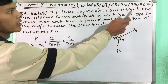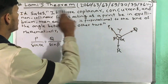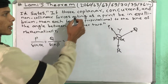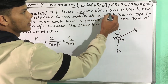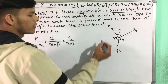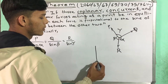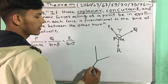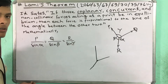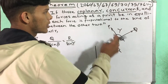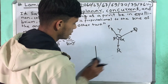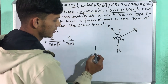This is a co-planar and concurrent and non-collinear force. In this case, this is the co-planar force, which acts at the same point — a concurrent force. These are 3 forces along a line of axis.